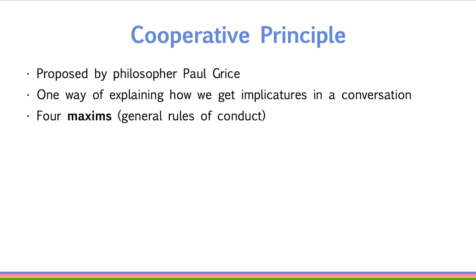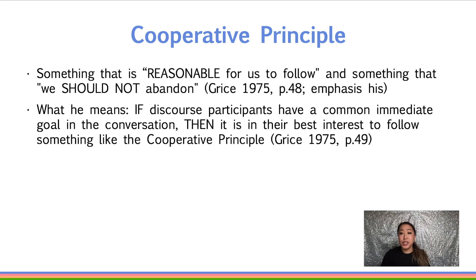You will notice that the maxims are stated as imperatives — for example, do this, don't do that. These are not meant to be prescriptive do's and don'ts. They should be taken as a way to describe someone's pragmatic knowledge in a language. It's similar to how phonological rules can be stated like: turn voiceless consonants into voiced consonants, or don't voice the consonant if you already have a voiced option in the morpheme. Grice at one point describes the cooperative principle as something that is reasonable for us to follow and something that we should not abandon. Sometimes this is misinterpreted to mean that the cooperative principle is a set of prescriptive rules — something along the lines of: if you don't follow these rules, you are not a good language user. However, that is not what he meant.